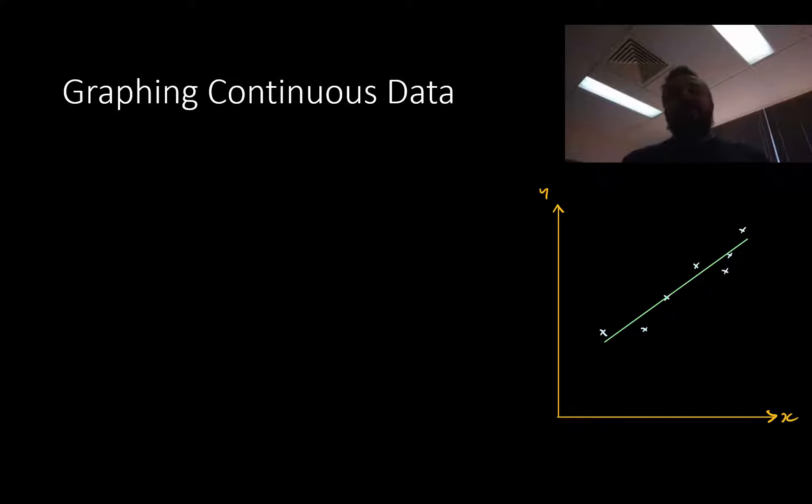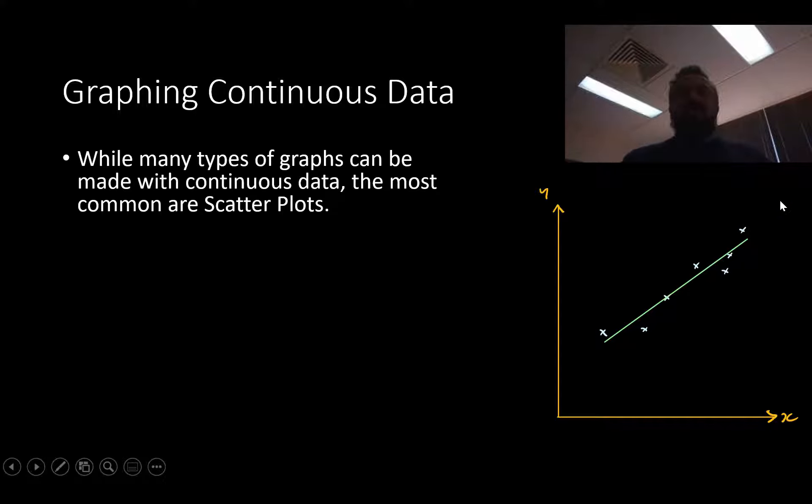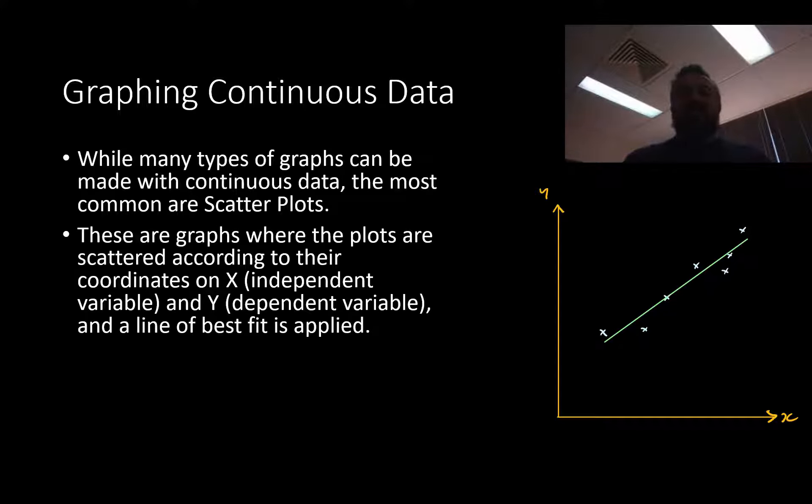Now when we graph it, this is the most common, and you'll see this here. Here we have a scatter plot and a line of best fit. So we can use other types of graphs, but the scatter plot is our most common. And these graphs are where the plots are scattered according to their coordinates on the X, which is the independent variable, and then the Y. So this one here, right? We'll go, we'll say, on the X value, so its independent value is here, its independent variable, its dependent variable moves up to there, and we put that plot right there. And then we apply a line of best fit.